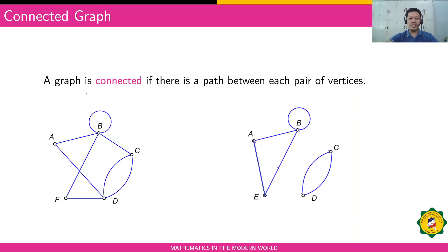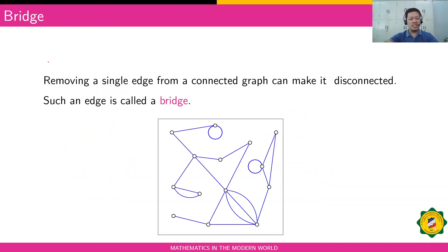A connected graph is a graph where there is a path between each pair of vertices — you can go from one vertex to any other vertex. This first graph is connected. The other one is not a connected graph because there's no edge connecting vertex B with the other part of the graph.